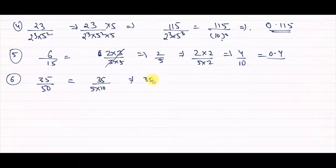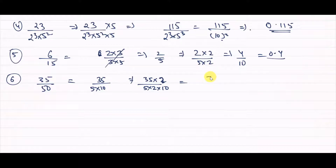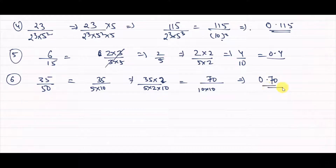For 35 divided by 50: 50 is 5 into 10. There is a 1 to 10 and if we multiply by 2, our work is done. So 2 multiplied by 5 into 2 into 10 gives 70 divided by 10 into 10 — a total of 2 zeros. Placing the decimal 2 places from the right gives 0.70. Very simple question.